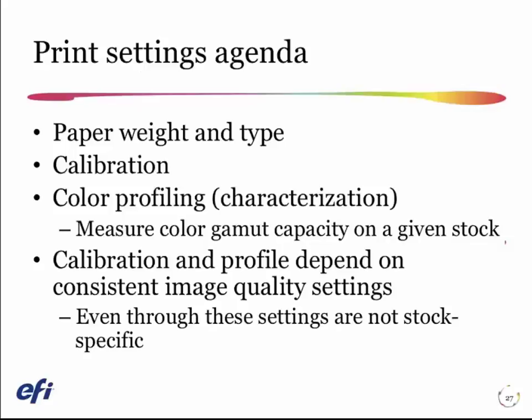Let's look at how we configure paper settings on our DFE. Generally, on any DFE — and we're going to use the Fiery for an example today — I need to configure the print system for the paper weight and the paper type, by which I mean the coated or uncoated nature of the paper. I need to establish a calibration for that paper so that I linearize the total response on the paper, and then recalibrate back to that state in the future so I get consistent prints over time.